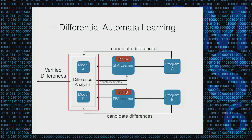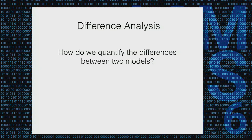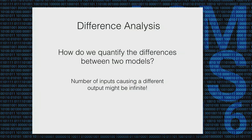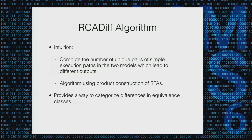The next thing is the difference analysis. We have two automata models and we would like to quantify the differences. The differences in two automata might be infinite — if you have a loop causing a difference, you have an infinite number of inputs causing different outputs. What we came up with is computing the number of pairs of execution paths that lead to different outputs. We enumerate all simple execution paths without loops, and this also provides a way to categorize differences and bucket them into equivalence classes.